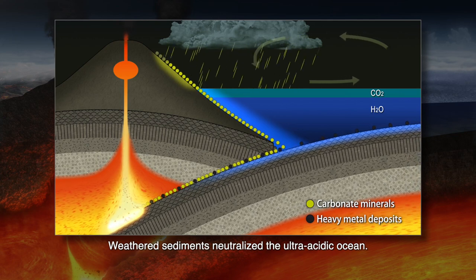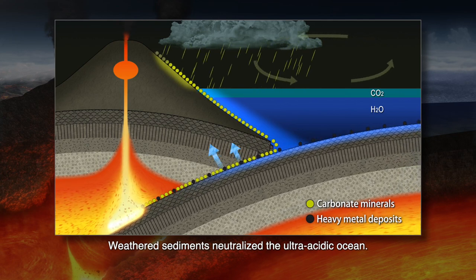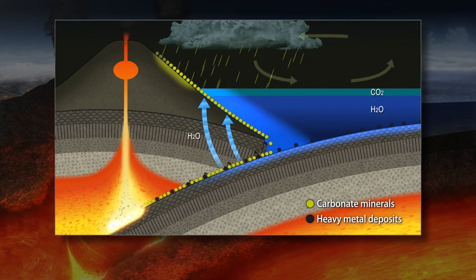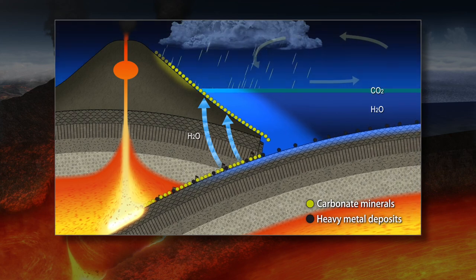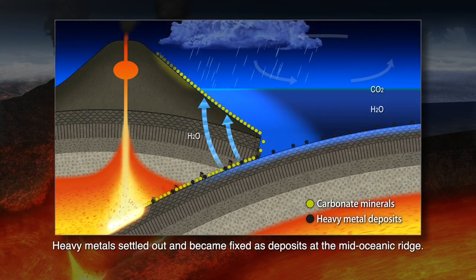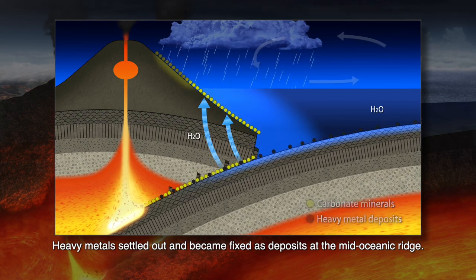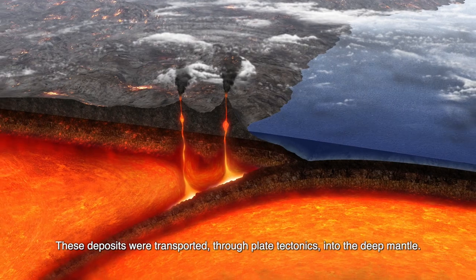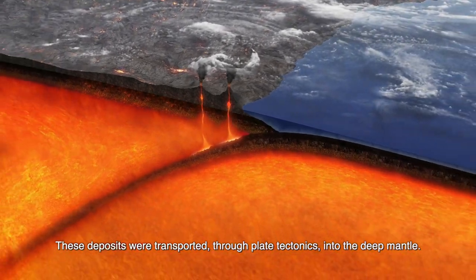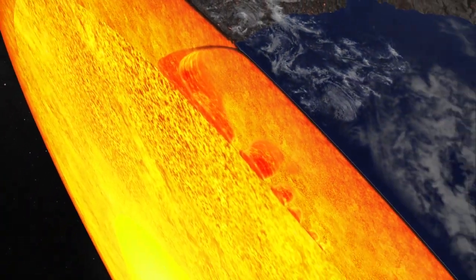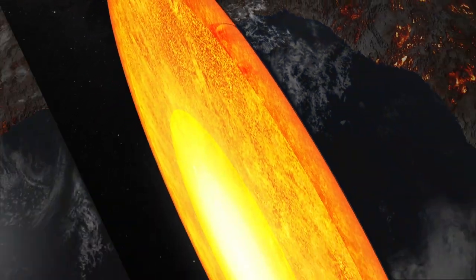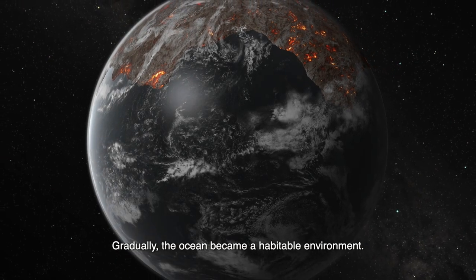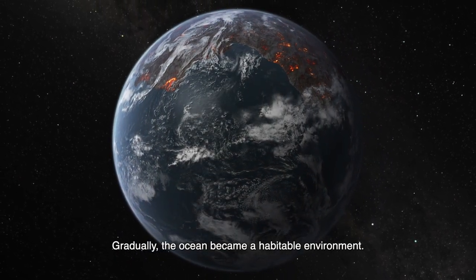Weathered sediments neutralized the ultra-acidic ocean. Heavy metals settled out and became fixed as deposits at the mid-oceanic ridge. These deposits were transported through plate tectonics into the deep mantle. Gradually, the ocean became a habitable environment.